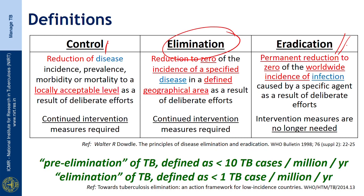The pre-elimination of tuberculosis is defined as less than 10 tuberculosis cases per million population per year, and the elimination of TB disease is defined as less than 1 tuberculosis case per million per year.